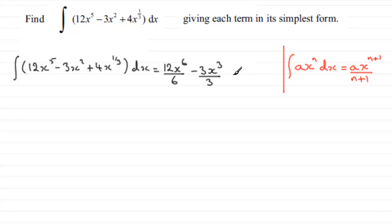For the last term, we have plus 4, and adding 1 to the power of one-third gives us one and one-third, or four-thirds as an improper fraction. So we get x to the power of four-thirds, divided by four-thirds. And we mustn't forget the constant of integration, plus c, though you can use any letter except x.